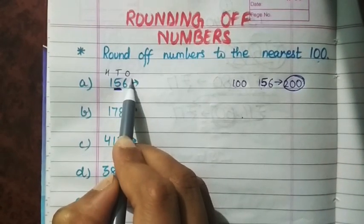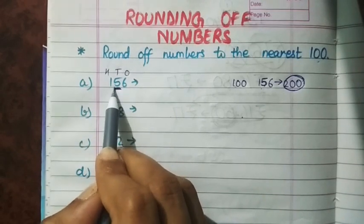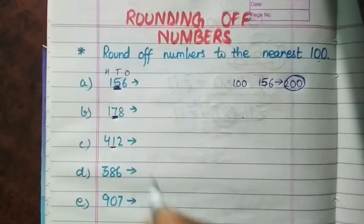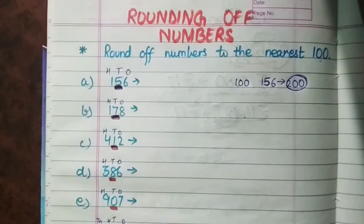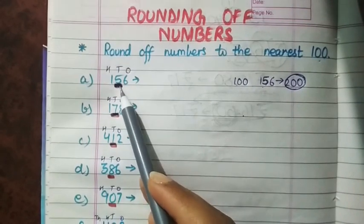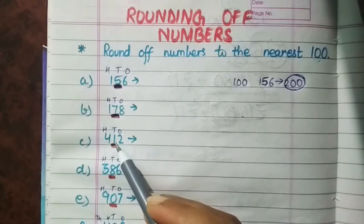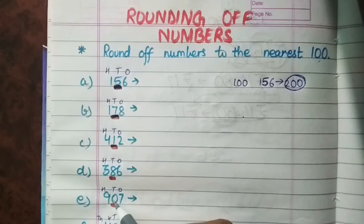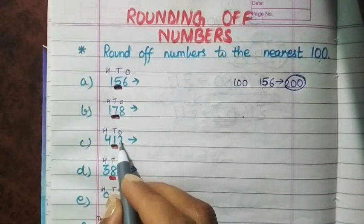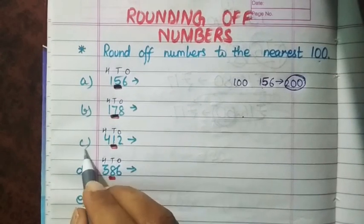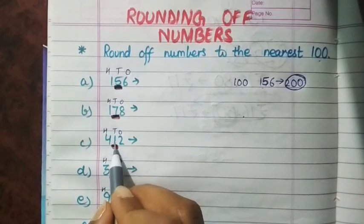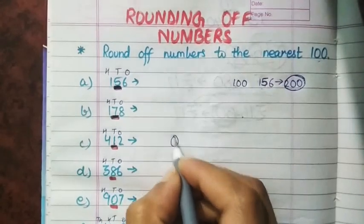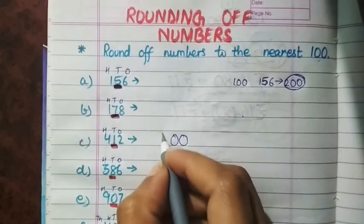Here, you are rounding off numbers to the nearest 100, so you have to look at the digit at the 10's place — the one before it. If the digit at the 10's place is less than 5, you make the 10's digit and 1's digit 0, and the other digits remain the same.